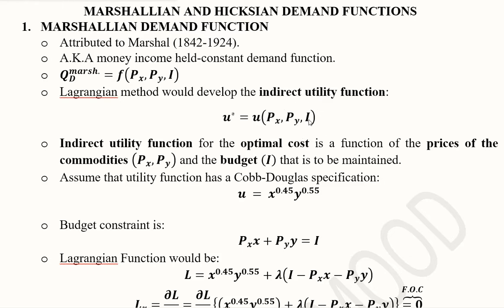This is what the utility function will look like once we make it the maximized or indirect utility function. Right now at the beginning we are given a standard form of a utility function, and we will derive this indirect utility function by going through the relevant procedure.